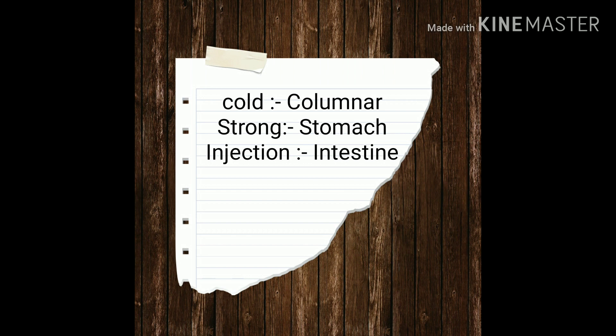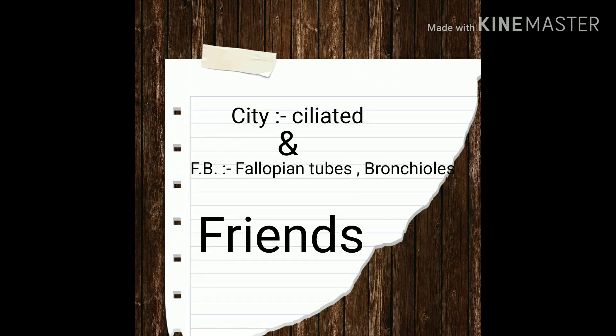In the sentence, 'strong' represents stomach and 'injection' represents intestine. The next word is 'CT' — CT represents ciliated epithelium, which is found in fallopian tubes and bronchioles. In the sentence, 'F' represents fallopian tubes and 'B' represents bronchioles.